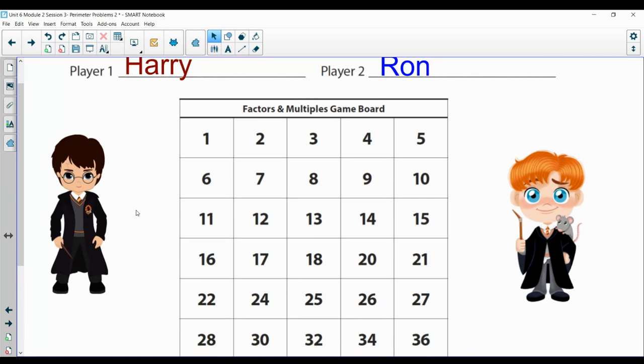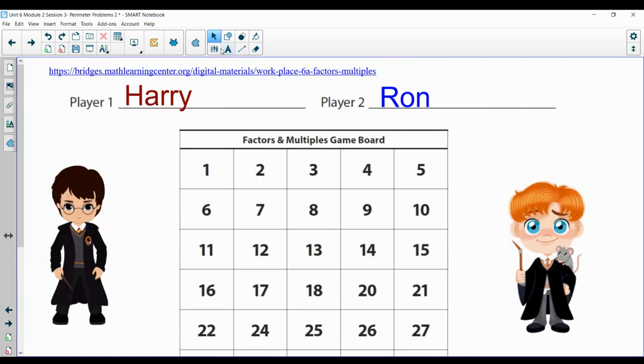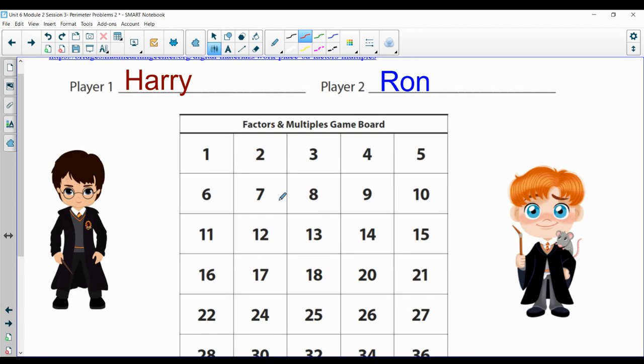We got Harry versus Ron. So Harry's going to start, he's player one. So Harry's going to sit there and say, I'm going to choose one of these as my target number. Let's pretend he's going to go with 10. So right away, he starts with 10 points.